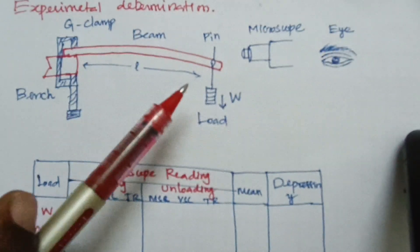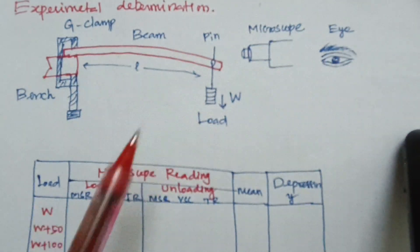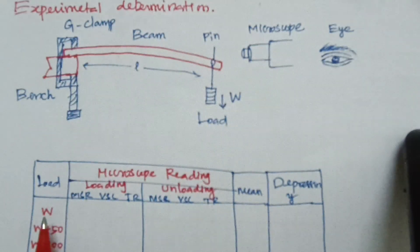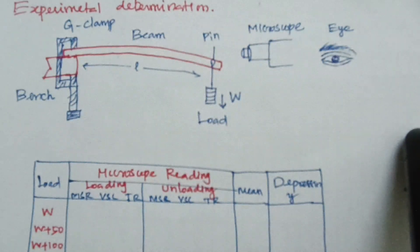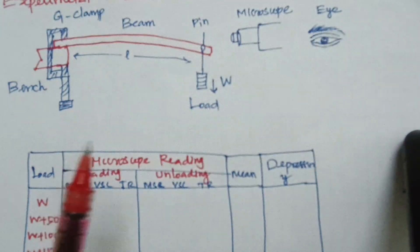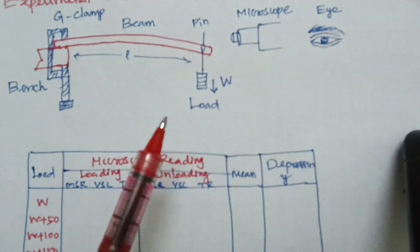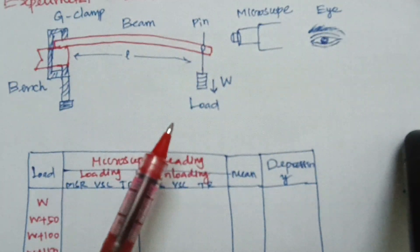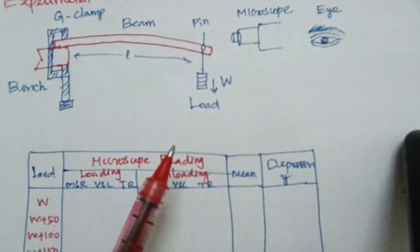A suitable mass is placed at the other end. First, you have to add W — that is, without mass — take the reading: MSR, VSC, and total reading. Then you have to add another 50 grams.